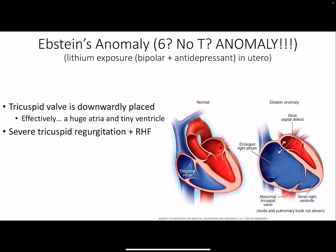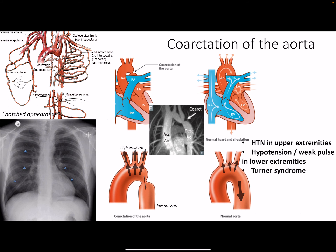Ebstein's anomaly: lithium exposure in utero — used as a treatment for bipolar disorder — can cause this. The tricuspid valve is pushed significantly downward and is open a lot more. As a result, the right ventricle becomes very small and weak, leading to right heart failure. In addition, the poorly positioned valve causes a lot of blood to regurgitate back into the right atrium, so there is also severe tricuspid regurgitation.